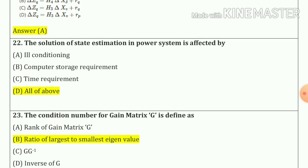Question number 22: The solution of state estimation in power system is affected by ill conditioning, computer storage requirement, and time requirement. So our answer is option number d — all of the above.